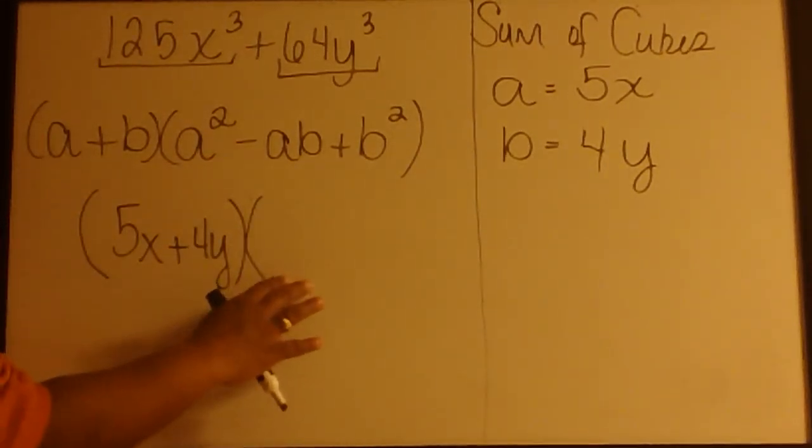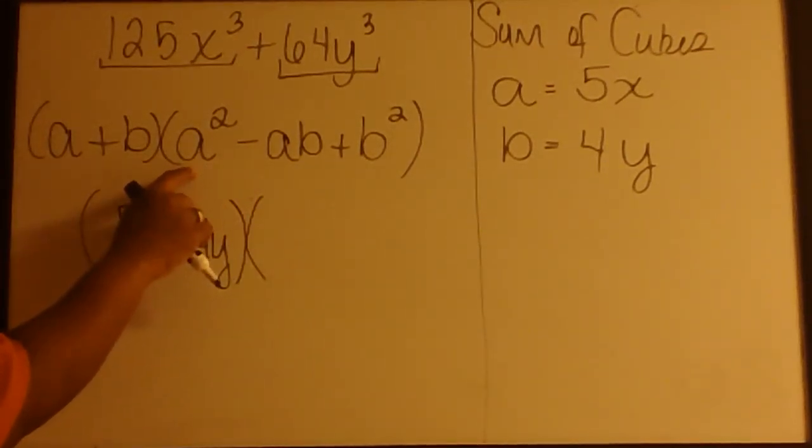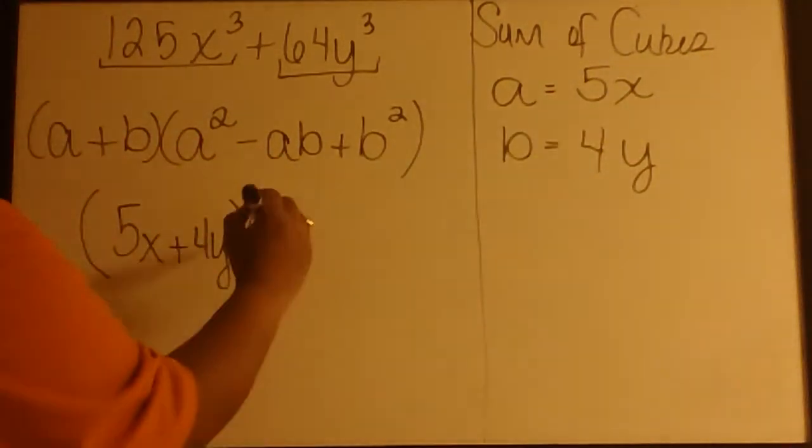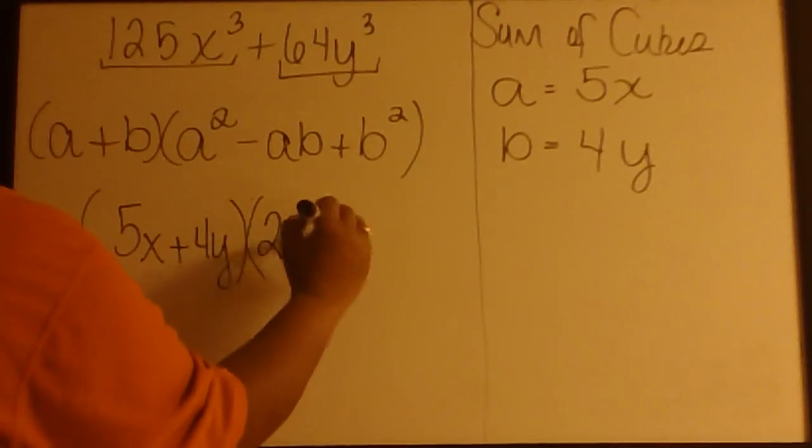Now, in the second parenthesis, we're told to square A. That means to square the 5 and the X, so we get 25X squared.